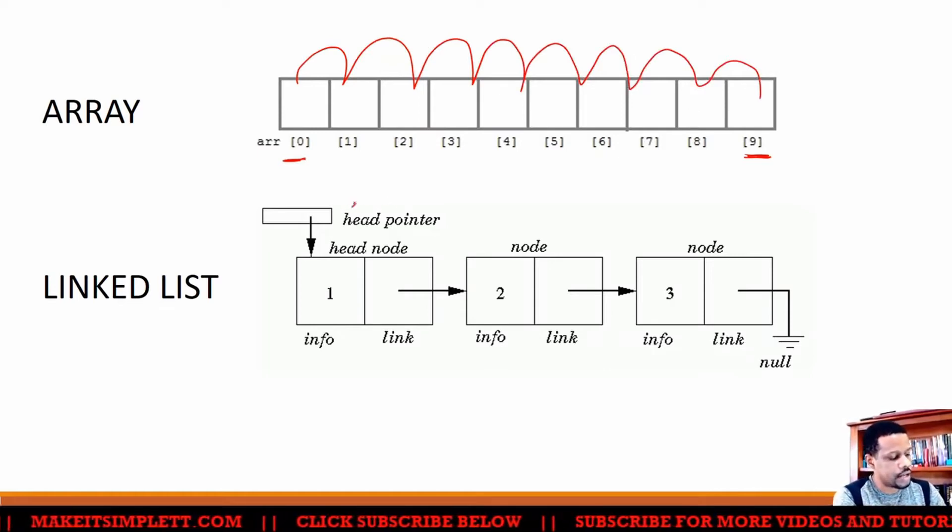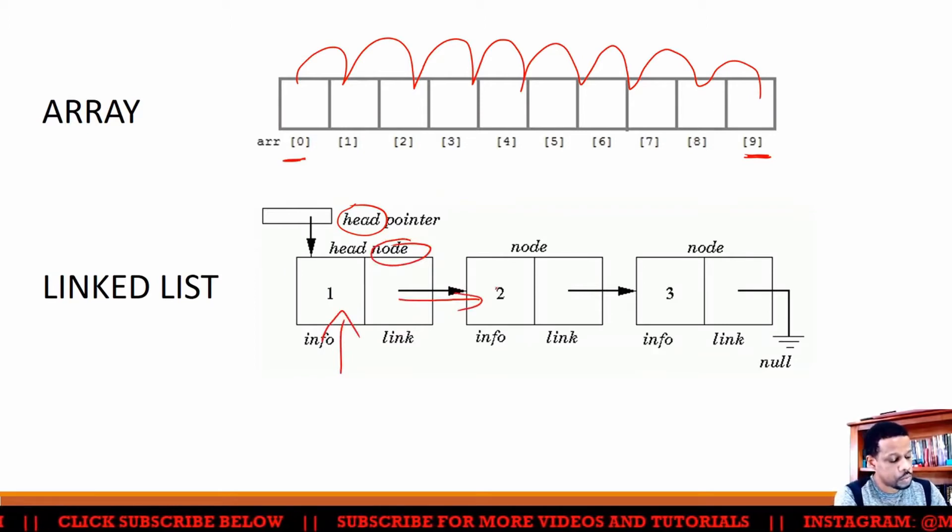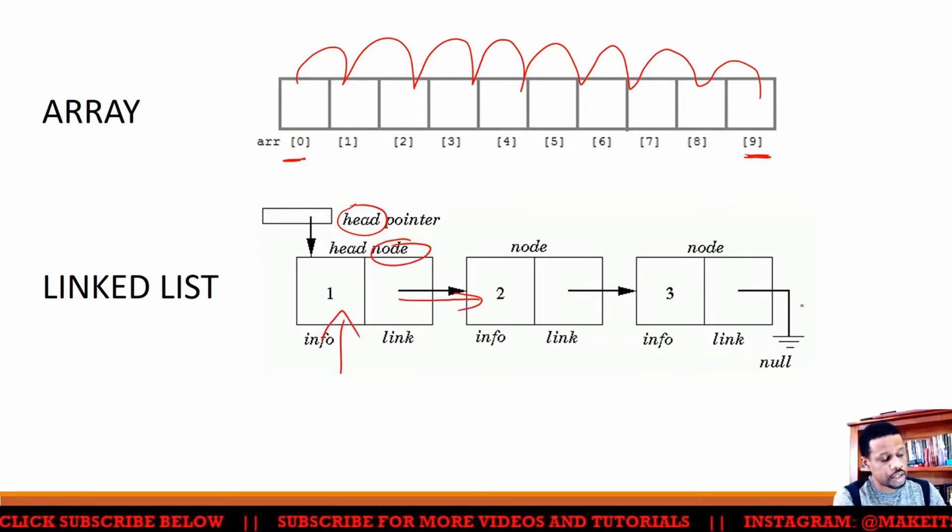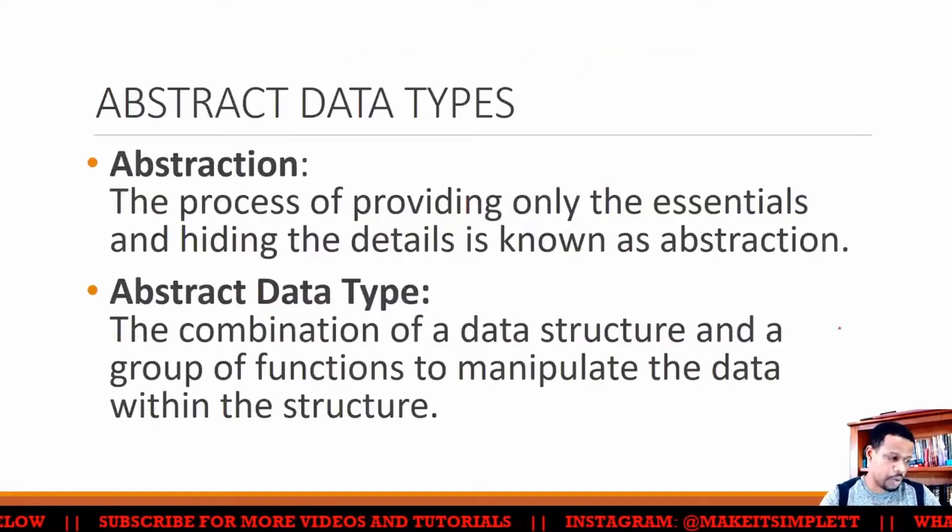A linked list has a head and then it has something called a node. Each node has info and then a link to another node. So whenever you're doing a linked list, it has a head, links to another node, and then the last thing will point to null.